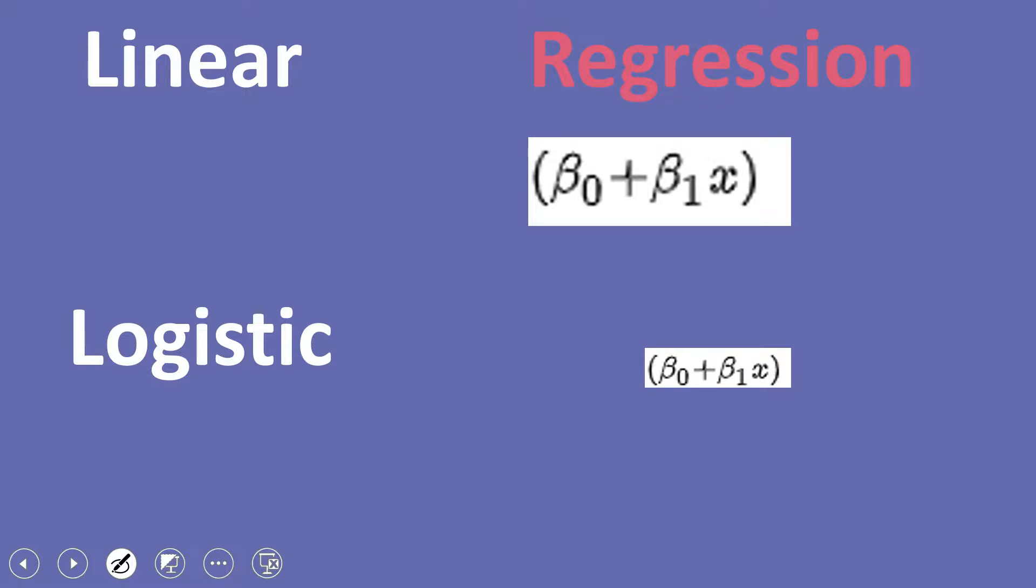But what happens, whatever output comes out of this, on that the sigmoid is applied. And when that is applied, it converts the number in the range of 0 to 1. Right? So that's why we see the logistic output as 0 or 1. And in this formula, this part which you see, this is something which causes it to be called logistic regression.